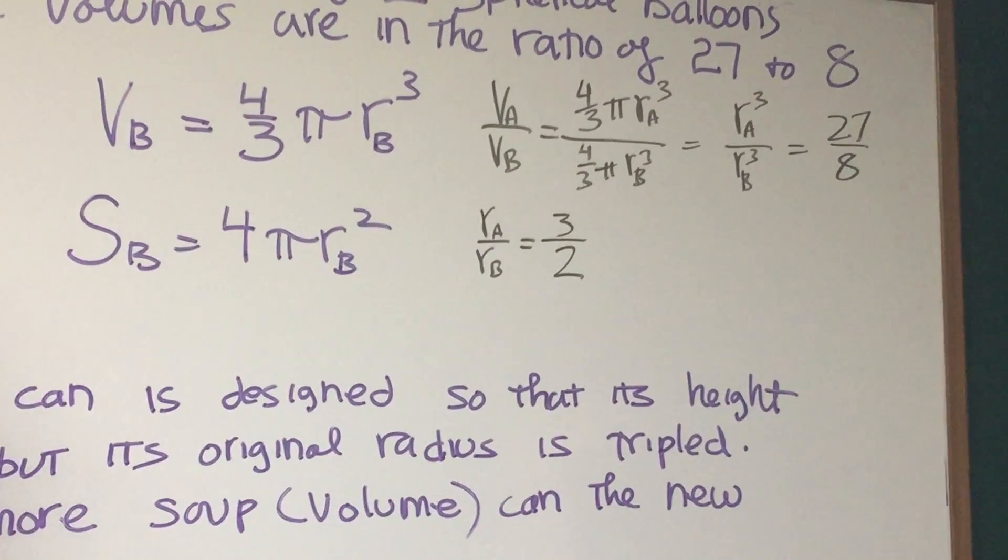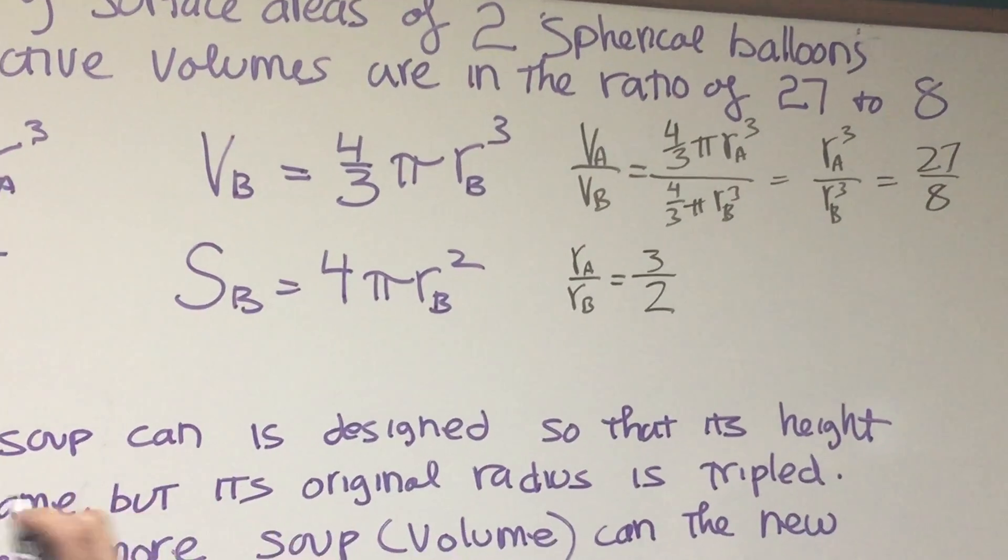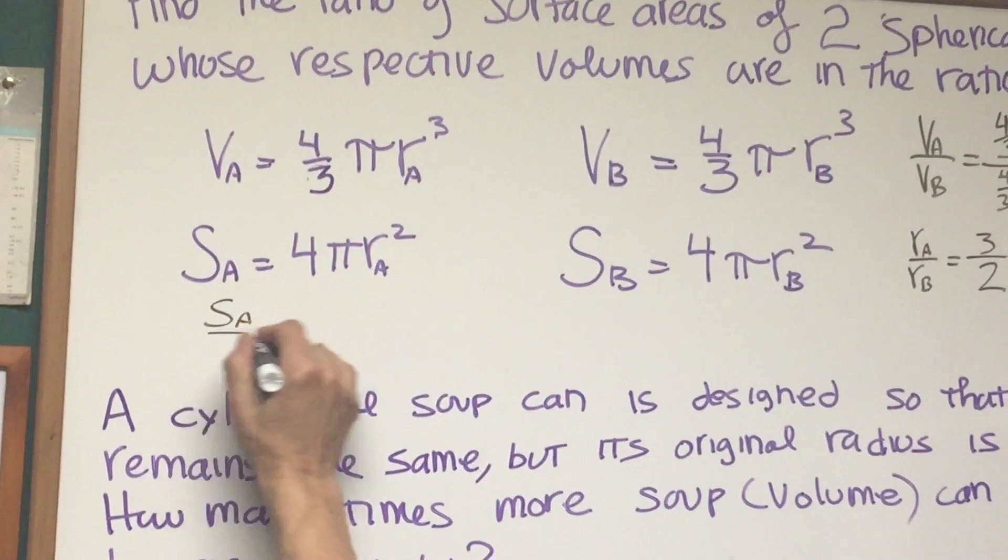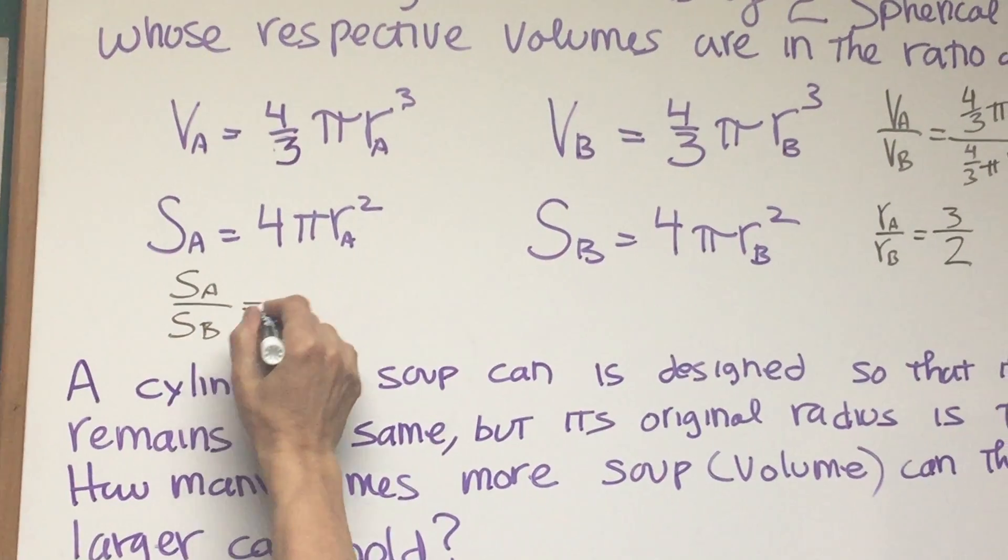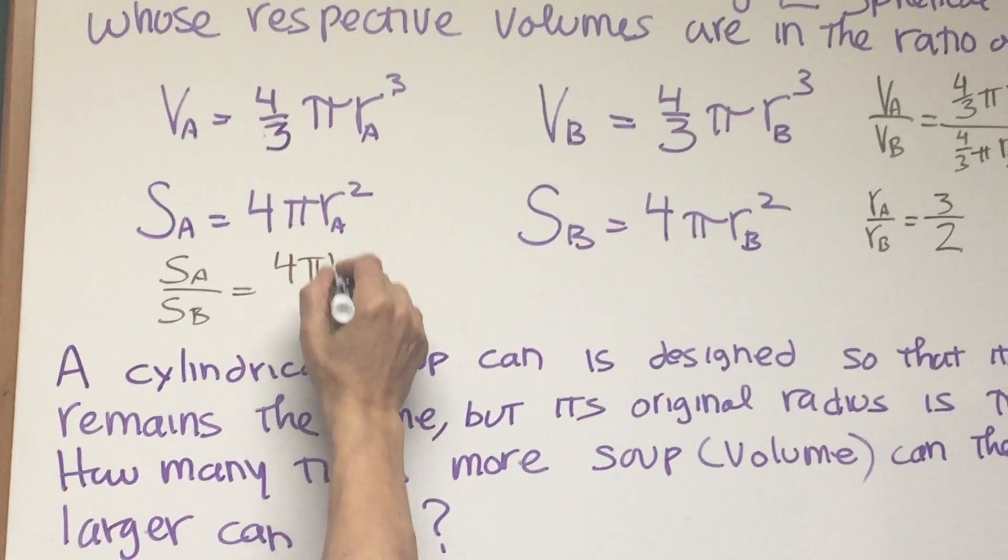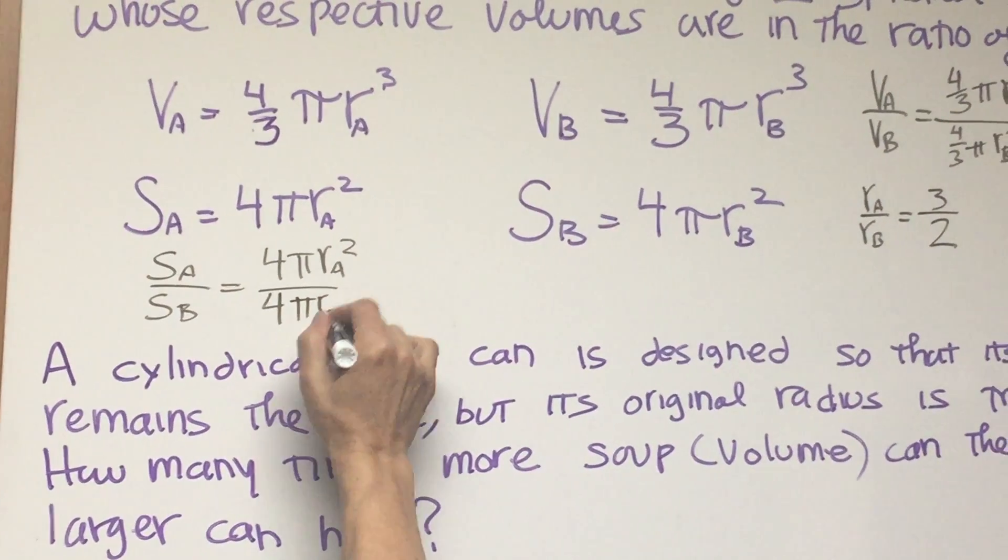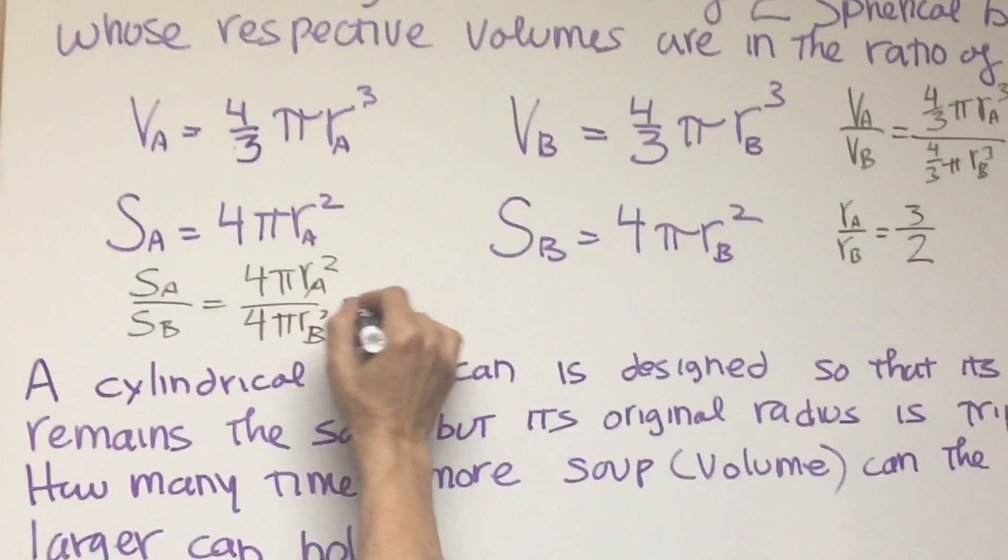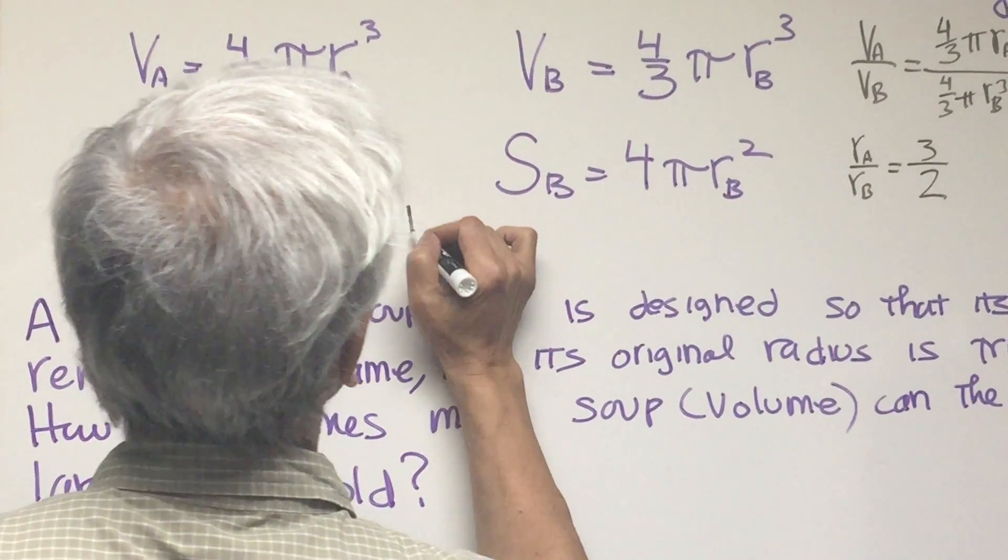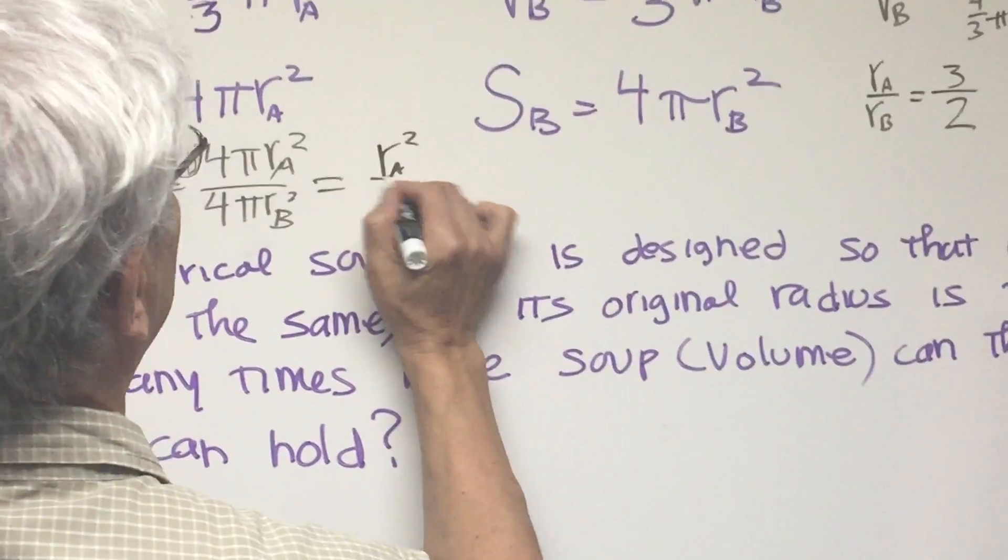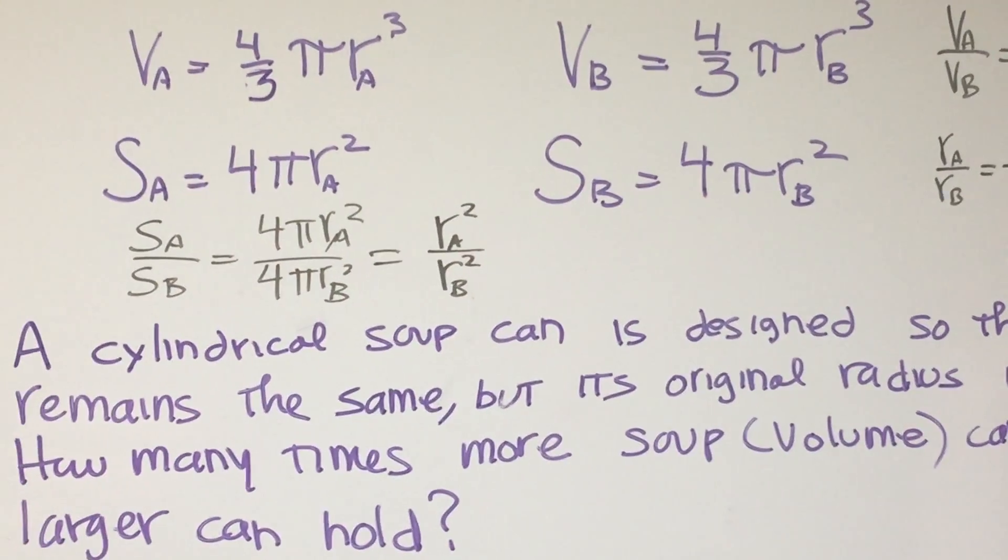So now what we're asked for in this problem is the ratio of the surface areas. So let's write down what the ratio of the surface areas are. The surface area of sphere A to the surface area of sphere B is 4πrₐ² over 4πrᵦ². Well, just like in the previous problem, you can see the 4 and the π is going to cancel out. The ratio of surface areas is just simply going to be the ratio of the squares of the radii.